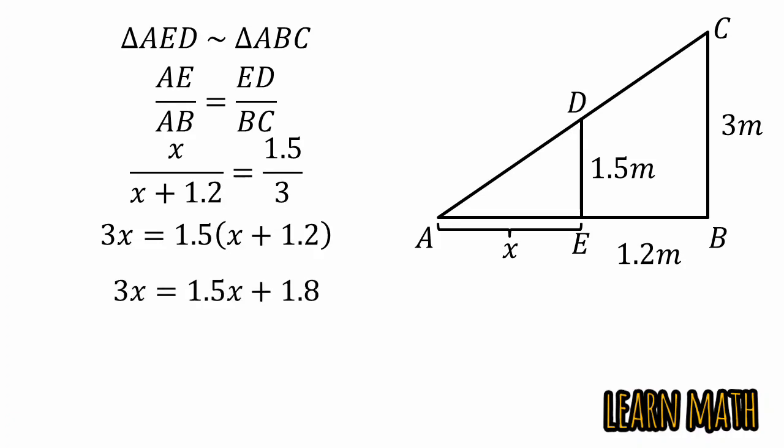Now, 3X minus 1.5X is equal to 1.5X. Dividing both sides by 1.5 and we will get X is equal to 1.2 and this is the required answer.